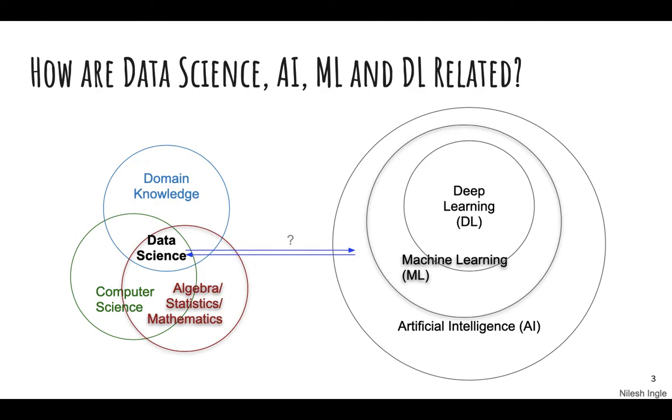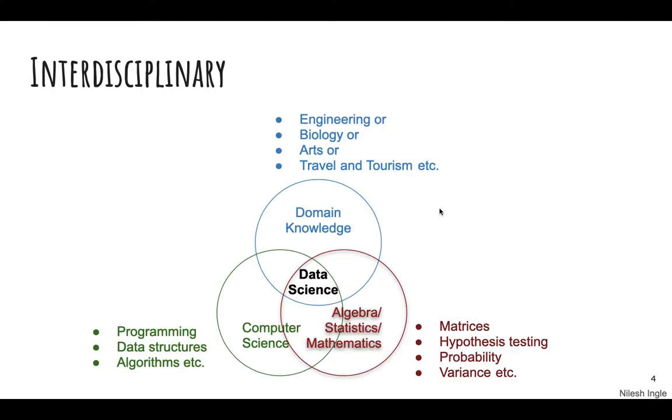Branching out from data science we have artificial intelligence, which is AI. From what I've read, machine learning is a subset of AI, and a subset of machine learning again is deep learning.